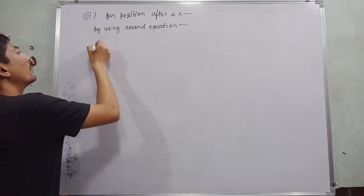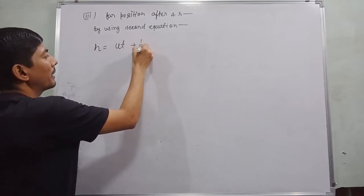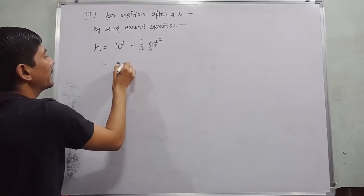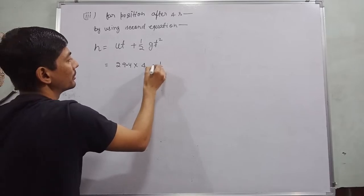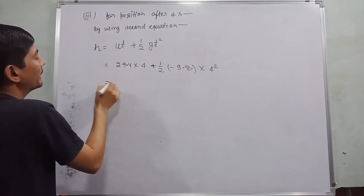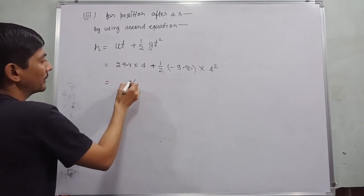which is h is equal to ut plus half gt square. u is 29.4, t is 4 seconds, plus 1 by 2, it is minus 9.8 and t is 4 square. So what happened: 4 times 4 is 16, 1 carry 4, 9 goes 36, 1, 37,